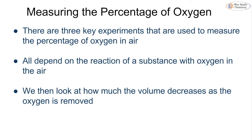When looking at the percentage of oxygen in air, we need to understand three key experiments used to measure this percentage — you could be asked about all three in an exam. They all depend on the reaction of a substance with oxygen in the air. The three substances are copper, iron, and phosphorus. We measure how much oxygen has been removed from an air sample, and that tells us the percentage of the air made up of oxygen.